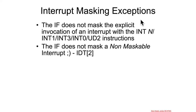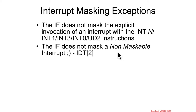There are a couple of exceptions to the interrupt masking: the interrupt flag does not mask the explicit invocation of an interrupt with those software instructions we saw previously — the int n, int 1, 3, 0, and into. Also, the interrupt flag does not mask a non-maskable interrupt. That's the whole point — the non-maskable interrupt is a high-priority thing that no one can stop, and it's just coming through.